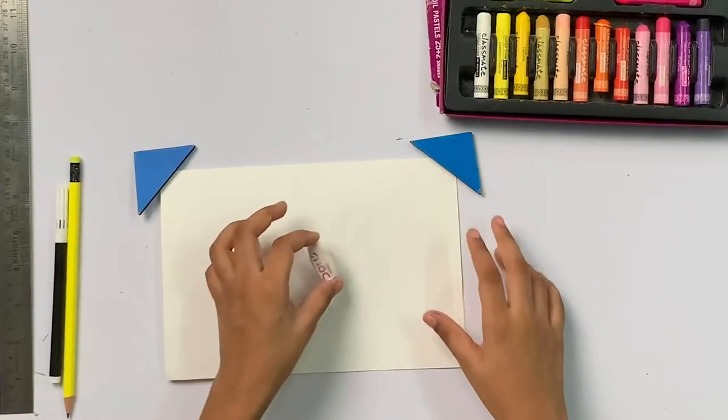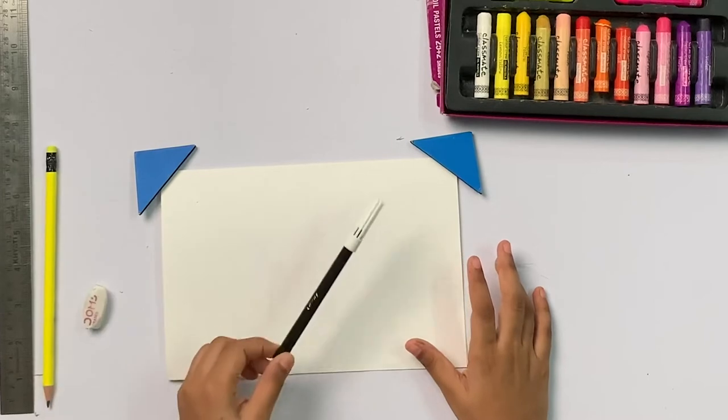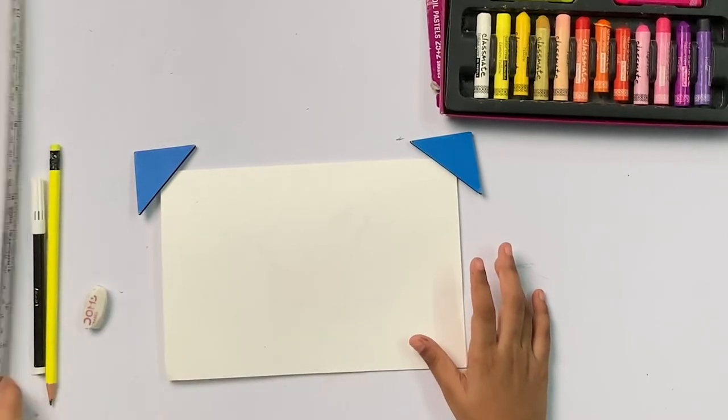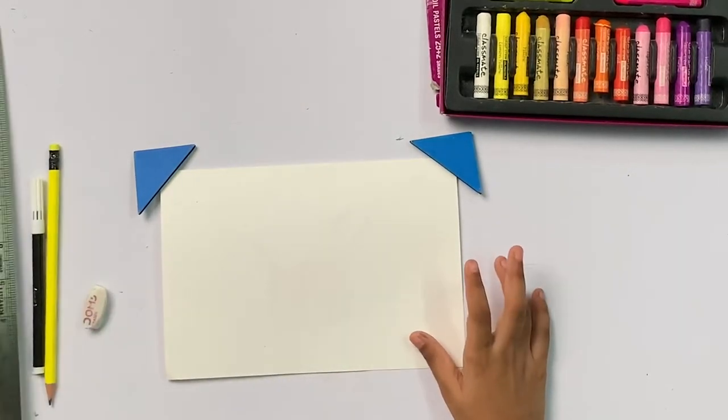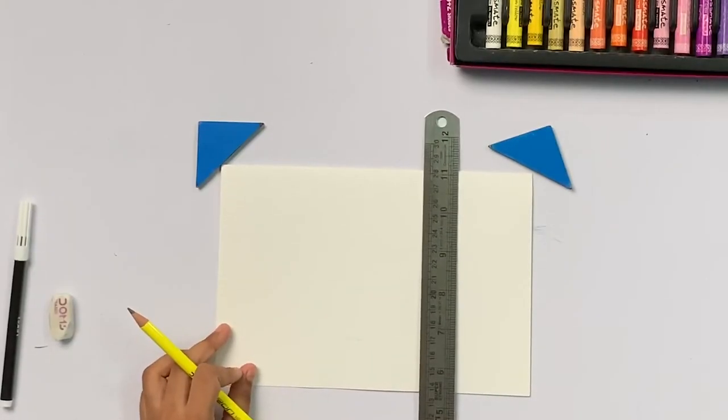So the things we need are an eraser, a pencil, a sketch pen, a scale and some colors. We are going to start off with a scale.